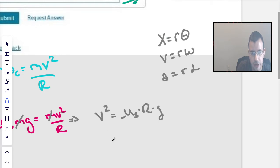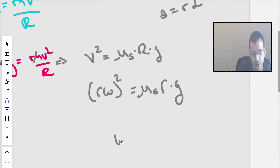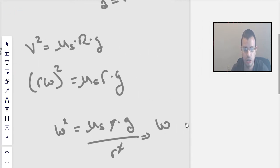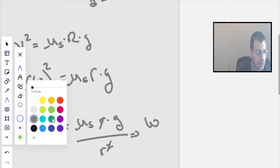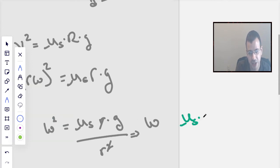So v² is going to be rω². I know, sometimes I use capital R, sometimes I use lowercase. I should be more consistent. I am not. It does keep life interesting though, I suppose. So ω² equals static coefficient of friction times r times gravity all over r². The r² cancels with one of those. And we find omega, the angular speed, is coefficient of static friction times gravity divided by radius.